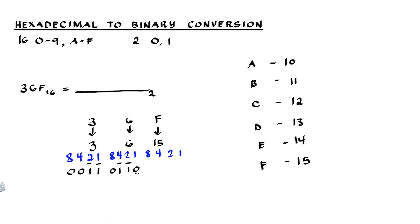Next we have 15. 15 is the sum of 8, 4, 2, and 1. So these are all 1's. 15 is equivalent to 1, 1, 1, 1 in binary.